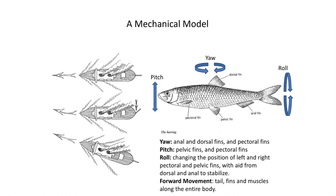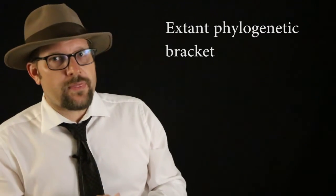We see with primitive chordates that dorsal and anal fins allow these primitive fish to turn for the first time, and that body muscle segments are used for the major propulsive forward movement in these very primitive fish-like animals. Let's now talk about another method for studying functional morphology: the extant phylogenetic bracket method.